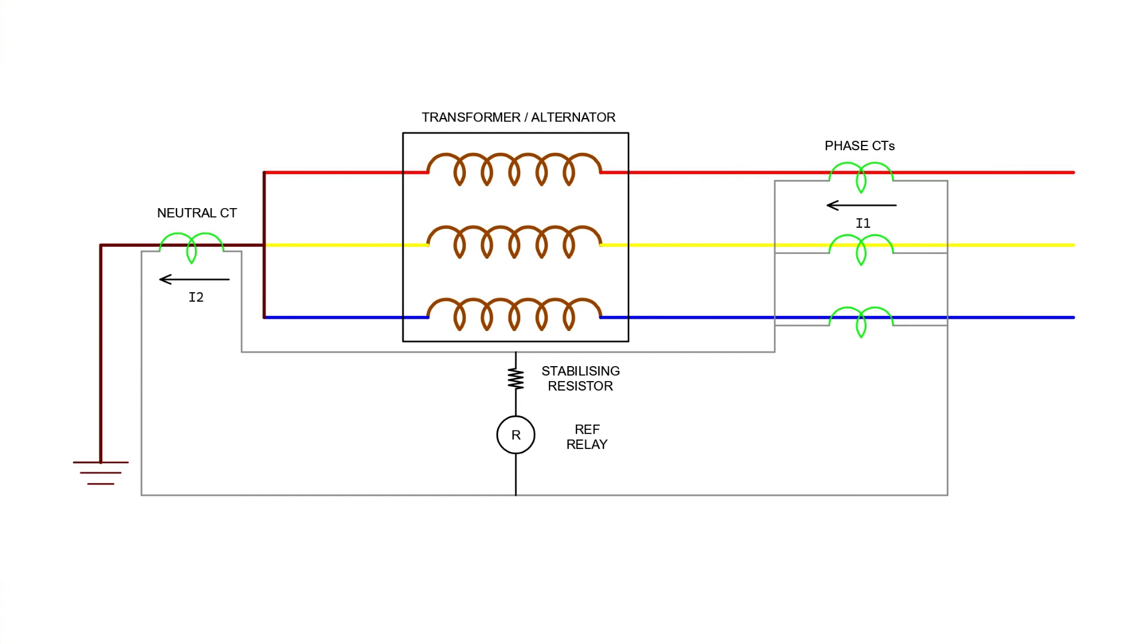This resistor is calculated such that under an external fault condition, that is for full fault level, the voltage developed by the unsaturated CT shall not circulate more current than the setting in the relay, thus preventing the relay from operating for an external fault and chattering.